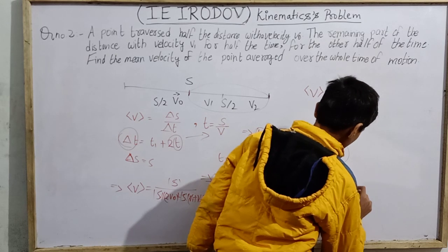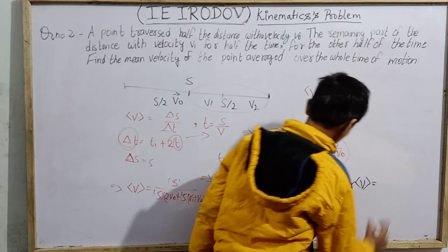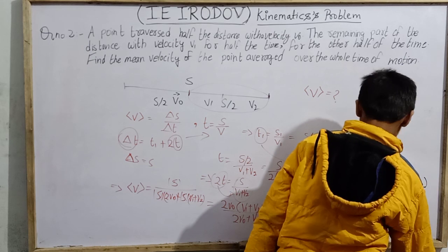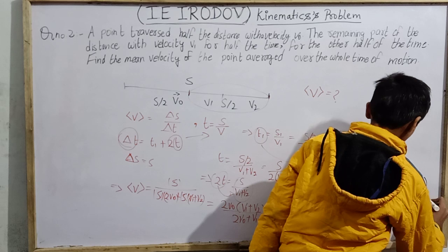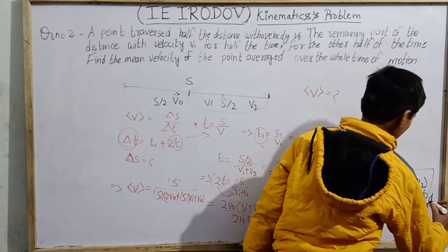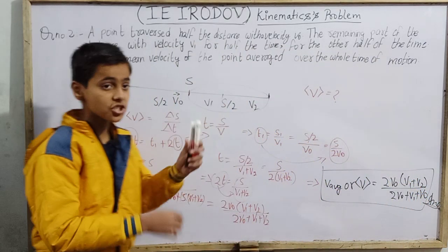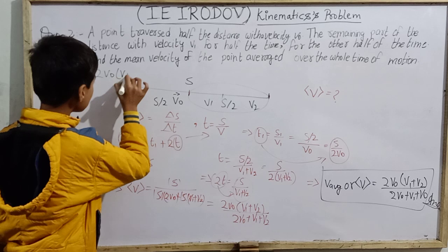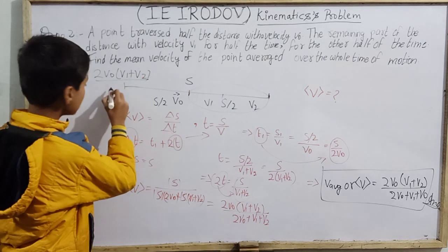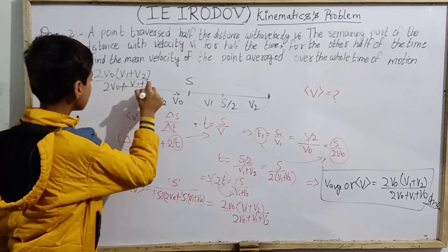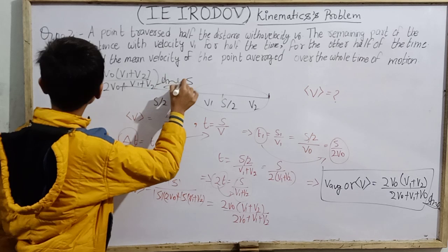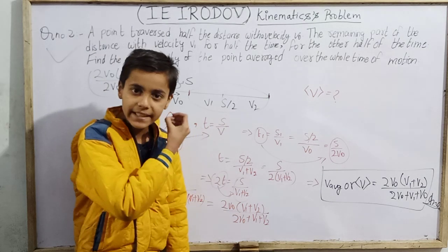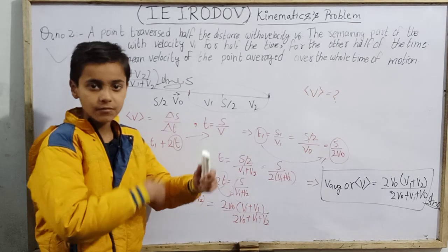After simplifying — taking the LCM — the mean velocity comes out to 2V0(V1 + V2) divided by (2V0 + V1 + V2). This is my mean velocity, which I also call average velocity. This is my final answer for question number two. It was a simple question requiring only proper visualization, and we solved it correctly.